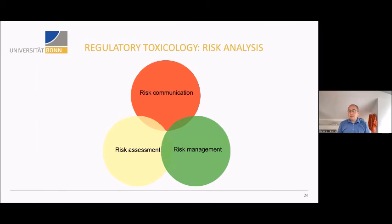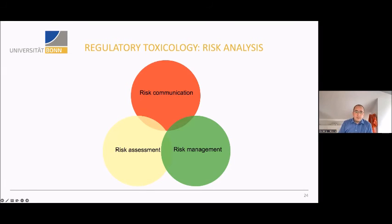In the last few minutes I would like to briefly address regulatory toxicology. Everything before was the experimental part, but I have had regulatory responsibilities in the past and would like to combine that with our experimental work. Toxicology risk analysis comprises three steps: risk assessment, risk management, and risk communication. Risk assessment is the scientific part — bringing together evidence from toxicology and other sciences. Risk management involves decisions and measures to be taken. Risk communication then communicates what has been assessed and decided.